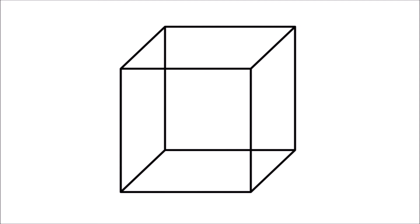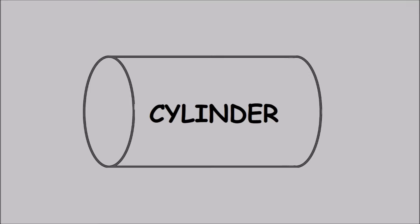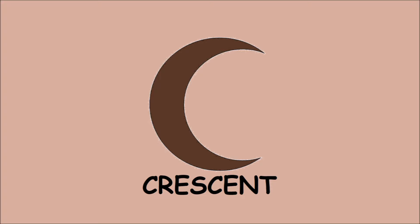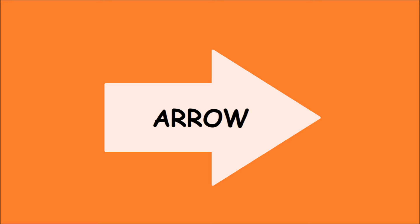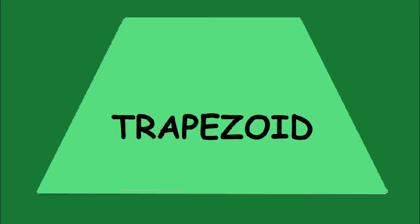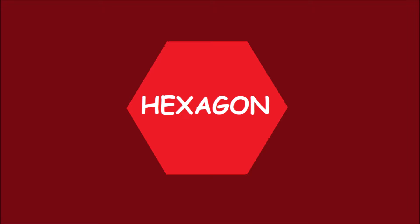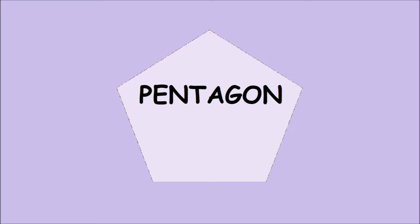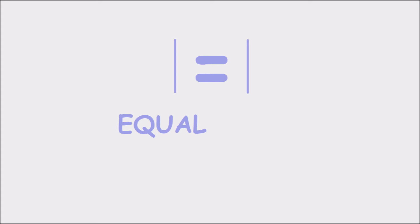Shapes: rhombus shapes, tube shapes, cylinder shapes, crescent shapes, arrow shapes, heart shapes, triangle shapes, trapezoid shapes, scale shapes, hexagon shapes, pentagon shapes. Space — equal means the same.